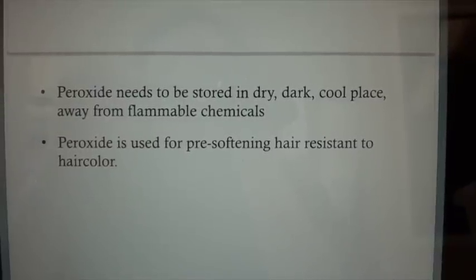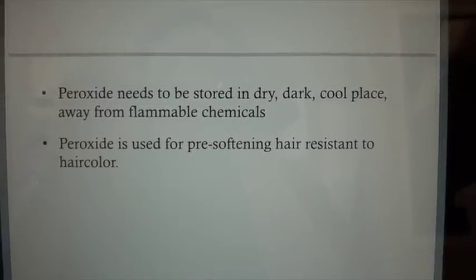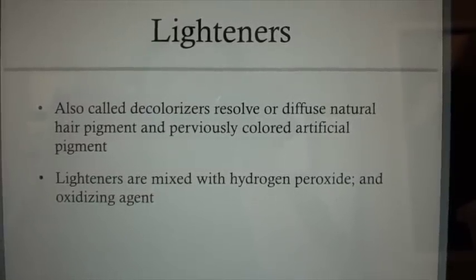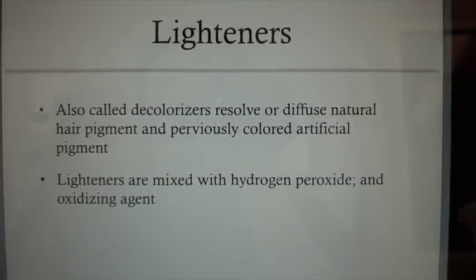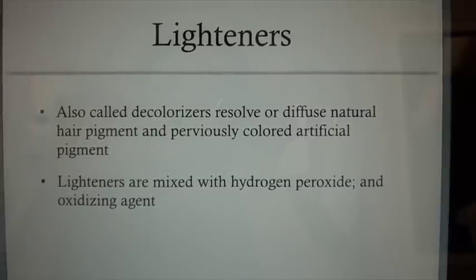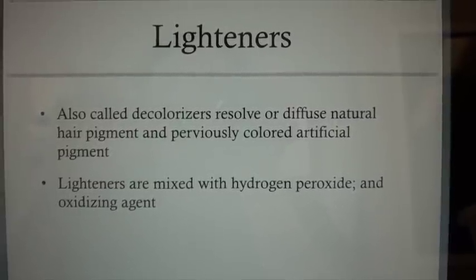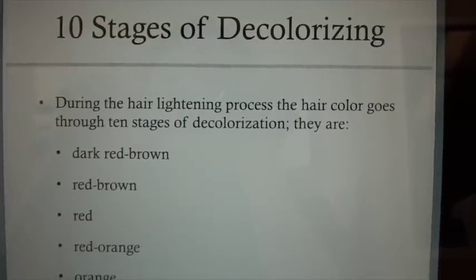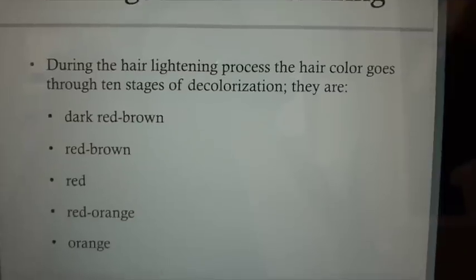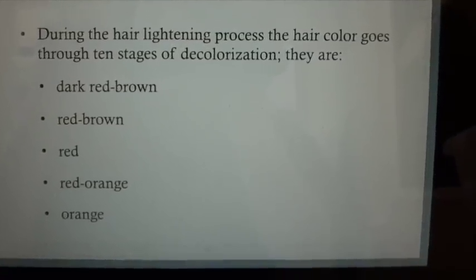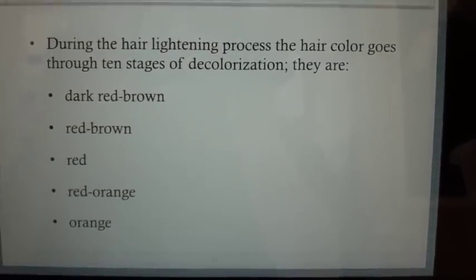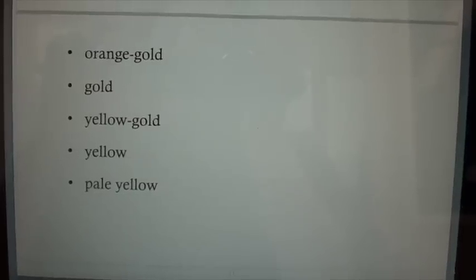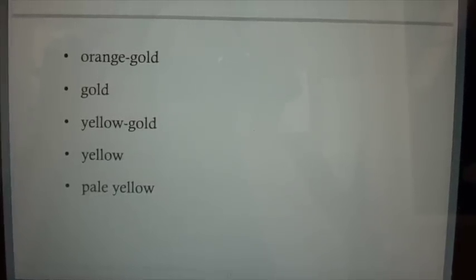Peroxide is used for pre-softening hair resistant to hair color. Lighteners, also called decolorizers, remove or diffuse natural hair pigment and previously colored artificial pigment. Lighteners are mixed with hydrogen peroxide as an oxidizing agent. During the hair lightening process, the hair goes through 10 stages of decolorization: dark red-brown, red-brown, red, red-orange, orange, orange-gold, gold, yellow-gold, yellow, and pale yellow.